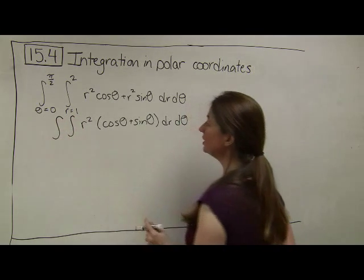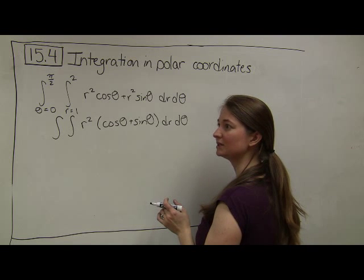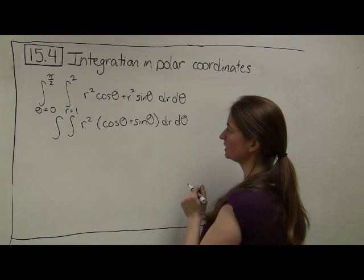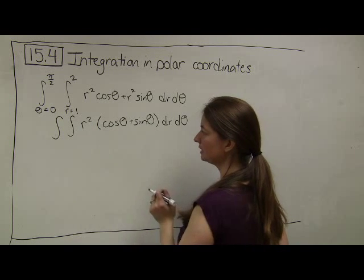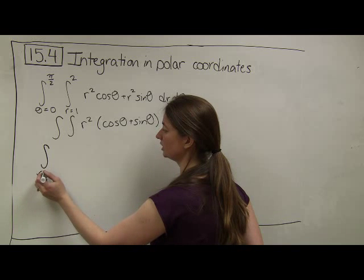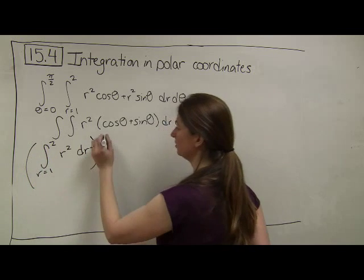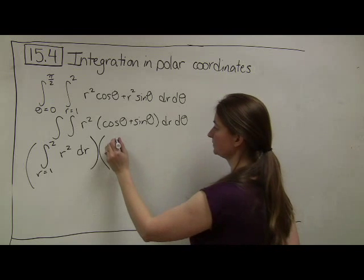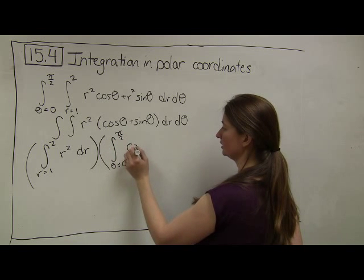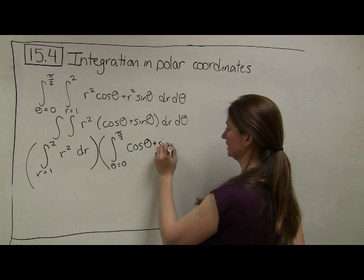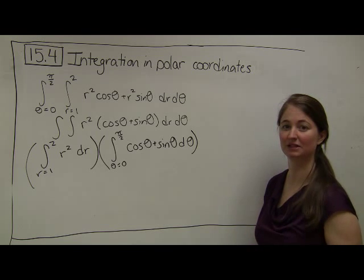Again, this is the double integral. And notice, now I actually have a product of a function of two variables. Let's revisit a technique that we saw all the way back in 15.1. I'm going to do a separation of variable technique. Because this is just a function of r and this is just a function of θ and they're multiplied by one another. I'm going to set this up as the integral r equals 1 to 2 of r squared dr multiplied by the integral of the function of θ. So in this case θ is going from 0 to π over 2 of cosine of θ plus sine of θ dθ.